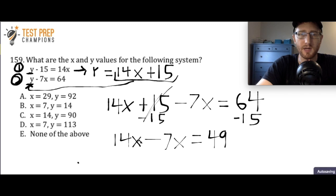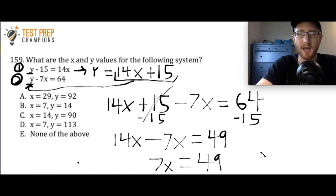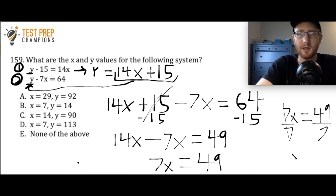Since I have 14x minus 7x, I do 14 minus 7, bringing the x along, which gives me 7x equals 49. To isolate x, I divide both sides by 7 — the 7s cancel on the left — and I get x equals 7.